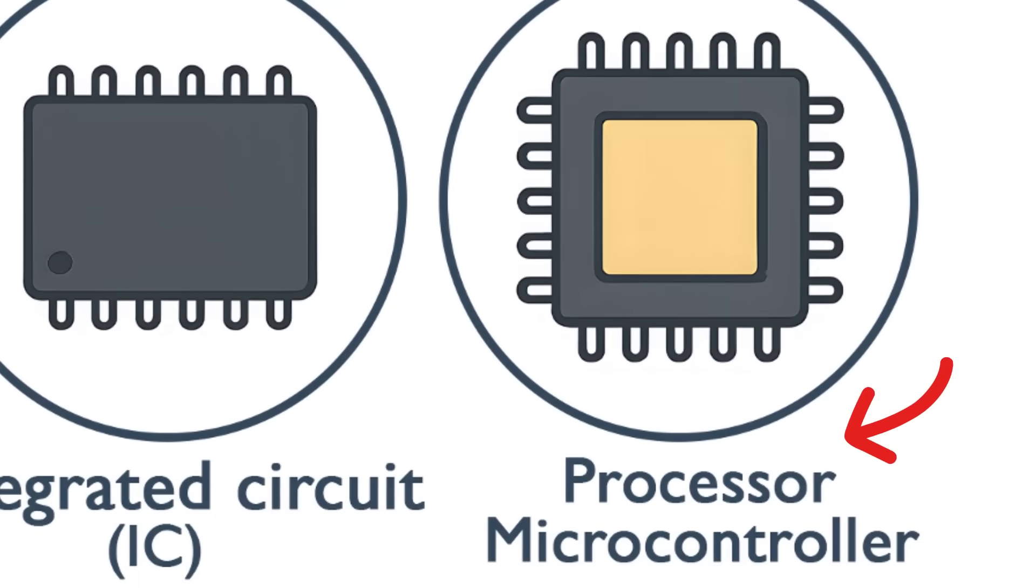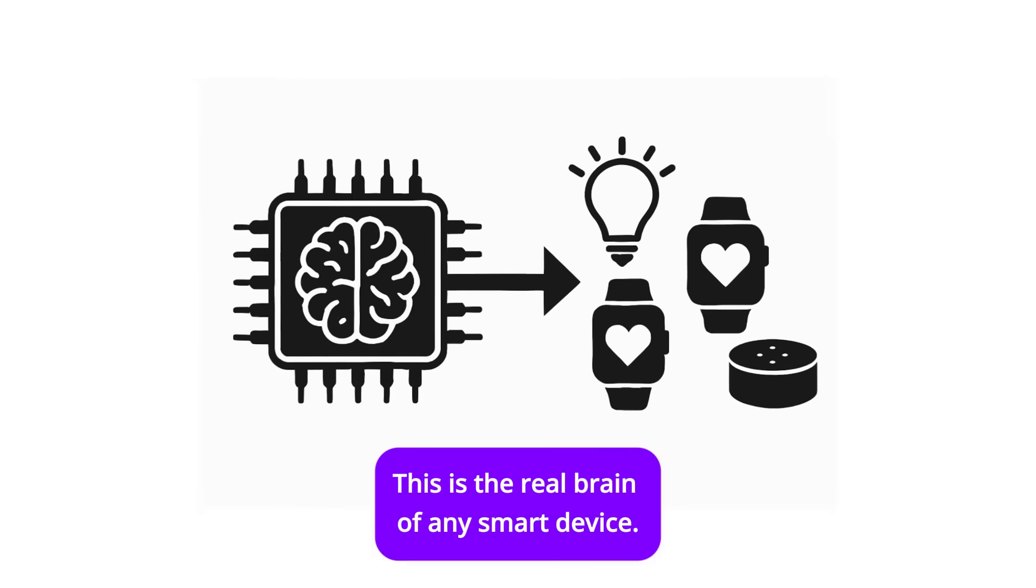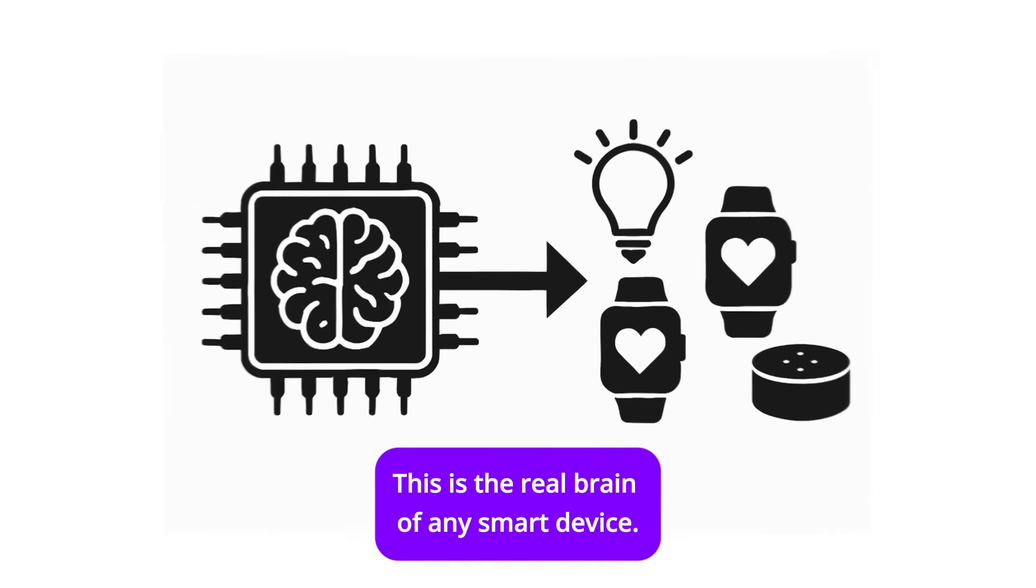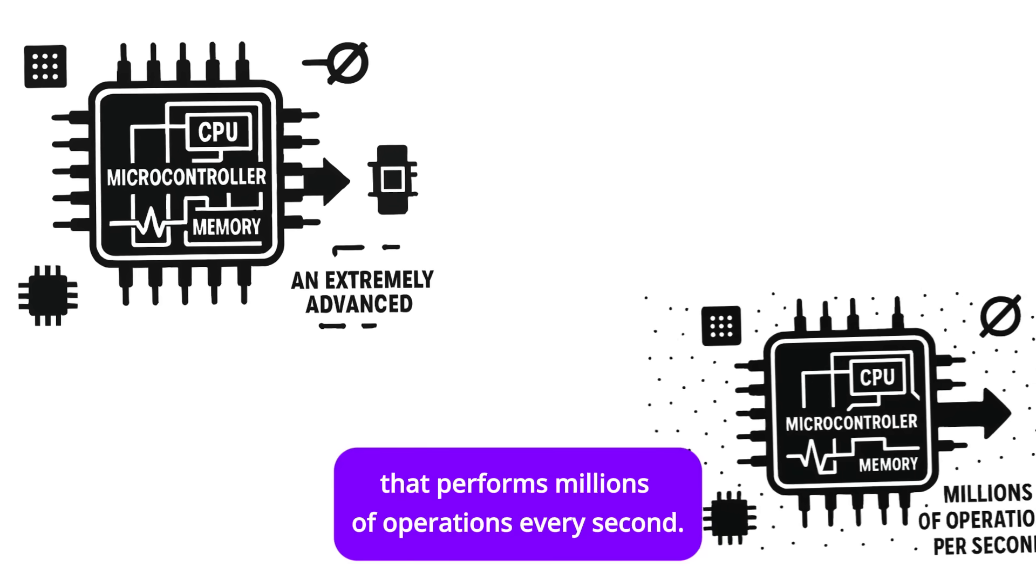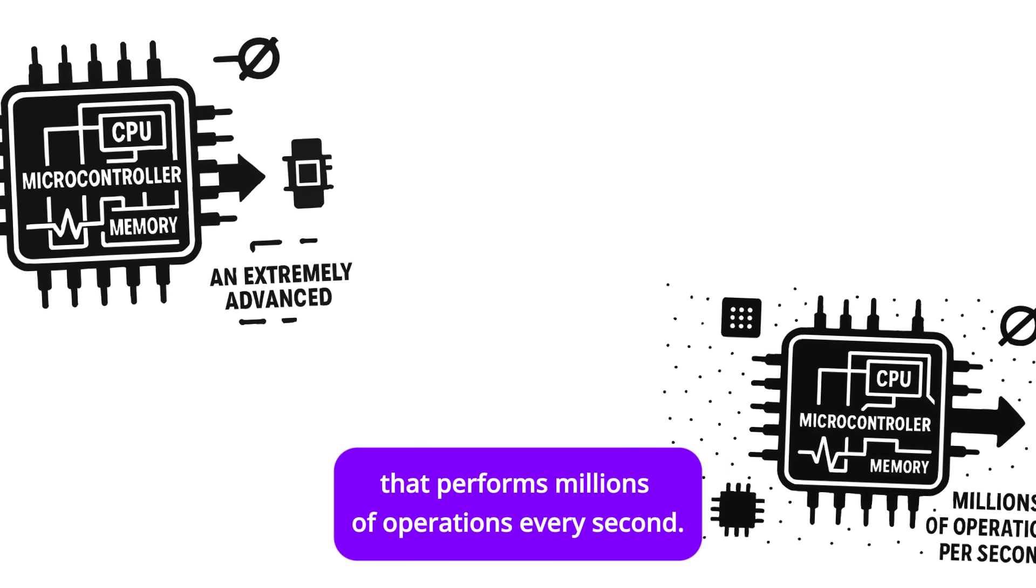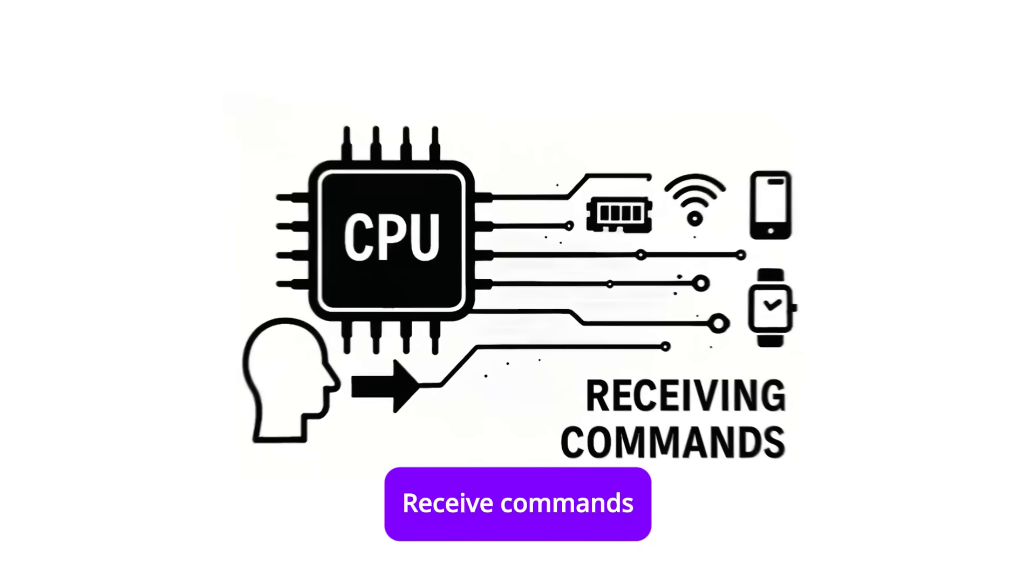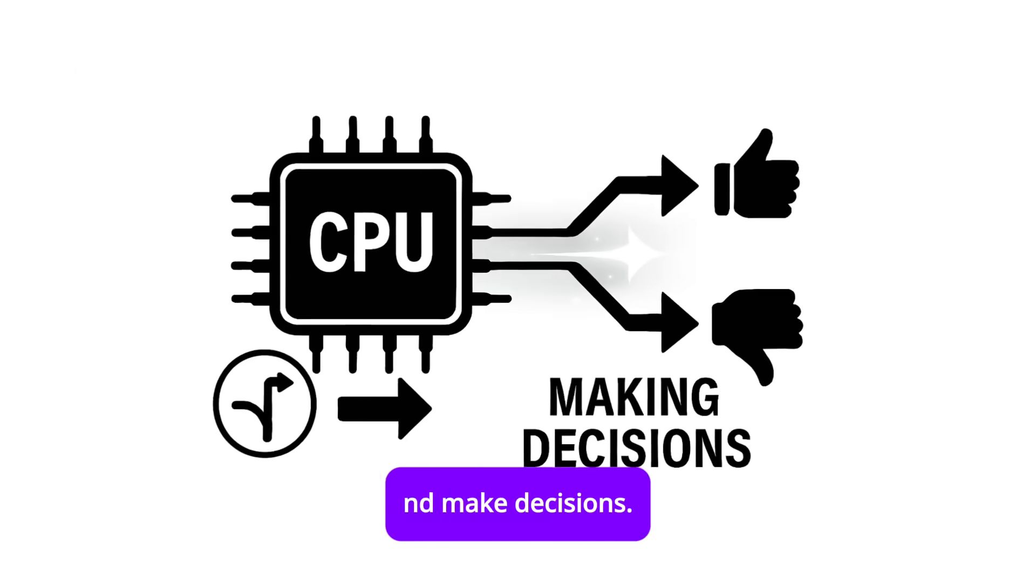Processor or microcontroller. This is the real brain of any smart device. It's a very advanced integrated circuit that performs millions of operations every second. Function: receive commands, process data, and make decisions.